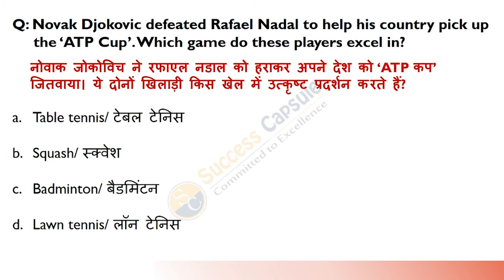Novak Djokovic defeated Rafael Nadal to help his country pick up the ATP Cup. The ATP Cup is associated with which sport? Answer is D — Lawn Tennis. These two prominent players are both in Lawn Tennis.